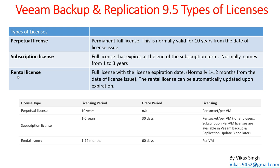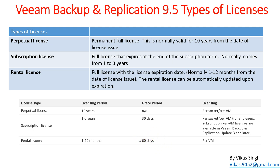Looking at license terms: perpetual licenses are valid for 10 years, subscription licenses for 1 to 5 years, and rental licenses for 1 to 12 months. Regarding grace periods: perpetual licenses have no grace period — once expired, you cannot use it. Subscription licenses get a 30-day grace period to renew, and rental licenses get a 60-day grace period to extend.